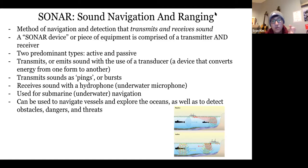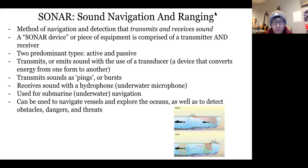A sonar device or sonar equipment is comprised of a transmitter and a receiver. There are two predominant types: active and passive sonar. Today we're going to be looking mostly into active sonar, because passive sonar is a very simple mechanism that we'll touch on briefly. Active sonar has a lot of nuances and it's probably the most versatile method of sonar available for a wide range of applications.